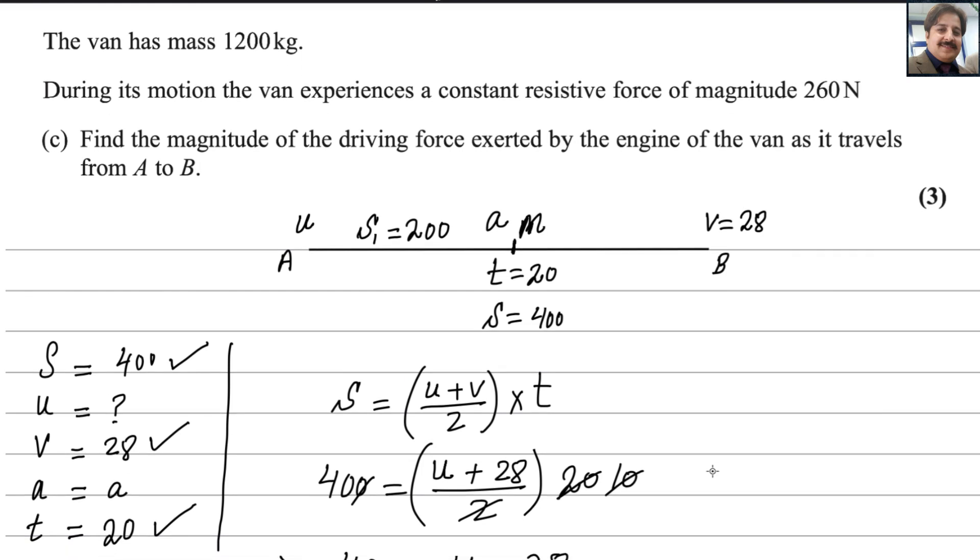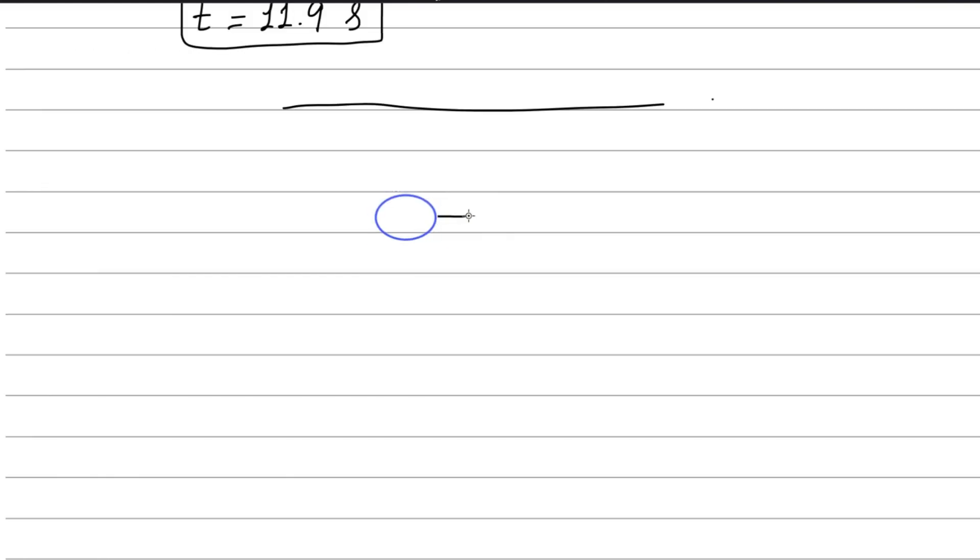The van has mass 1200 kg. During its motion the van experiences a constant resistive force of magnitude 260 N. Find the magnitude of driving force exerted by the engine as the van travels from A to B. Resistive force is 260 and we need to find the driving force. Let's say this is the van. Driving force acts this way from A to B, and force of resistance is 260 N.